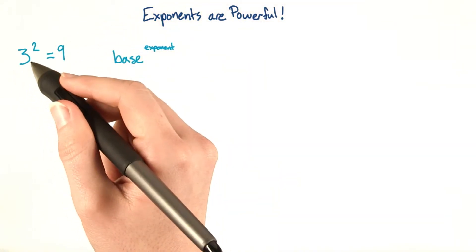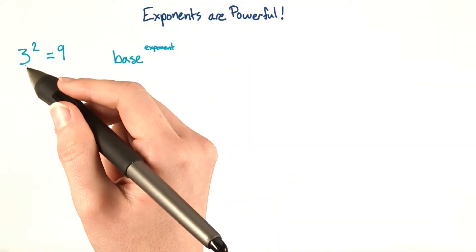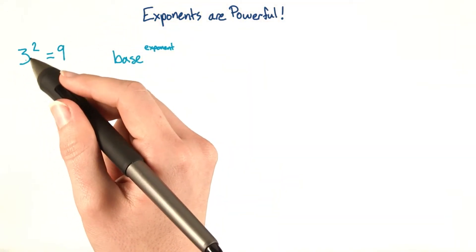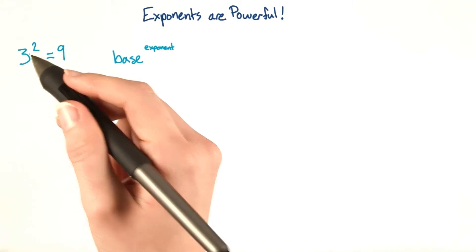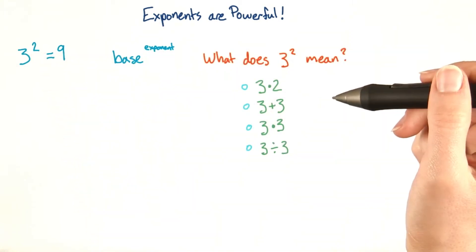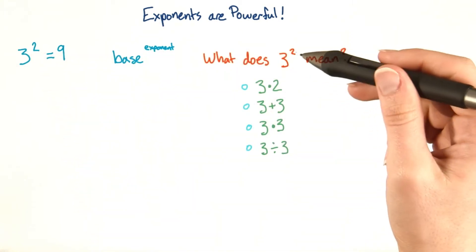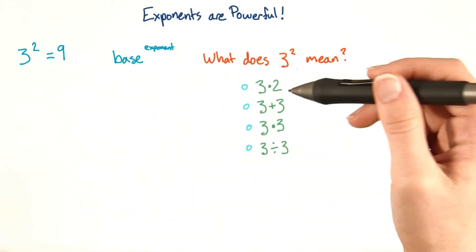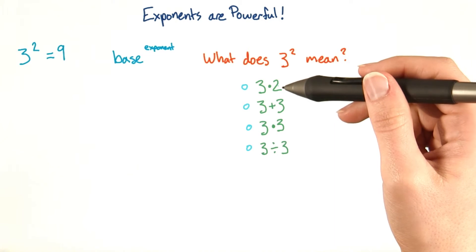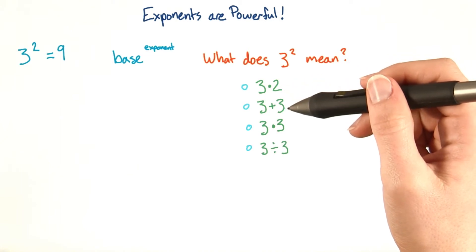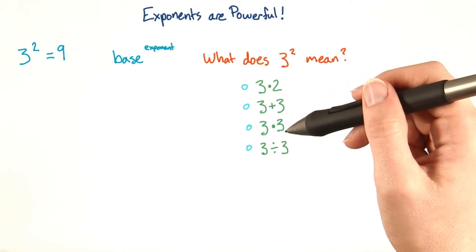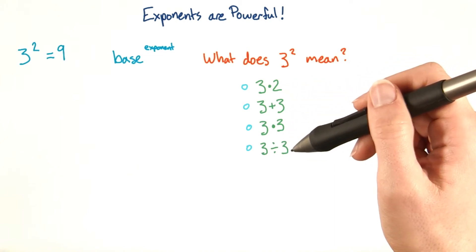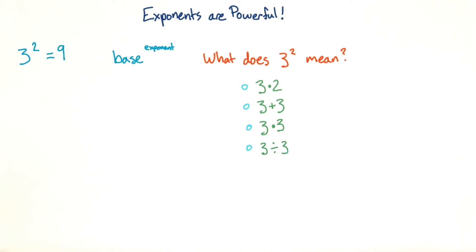Before, I called this 3 squared, but we can also call this 3 to the power of 2. So, what does 3 to the power of 2 mean? Is it 3 times 2, 3 plus 3, 3 times 3, or 3 divided by 3? Please pick one.